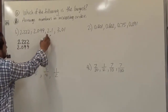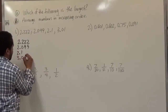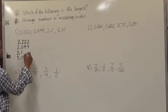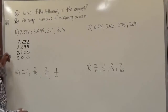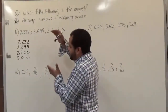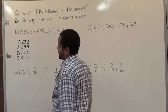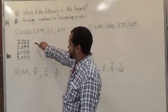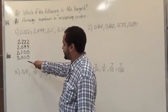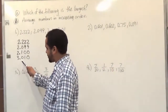So here we have 2.1 and the final number is 3.01. These numbers are missing the placeholders, so we're going to add zeros as placeholders — this doesn't affect the value of the number. What we want to do then is sort of ignore the decimal place and look at the numbers for what they look like. So this looks like 2,222, this one looks like 2,099, this looks like 2,100, and this looks like 3,010.